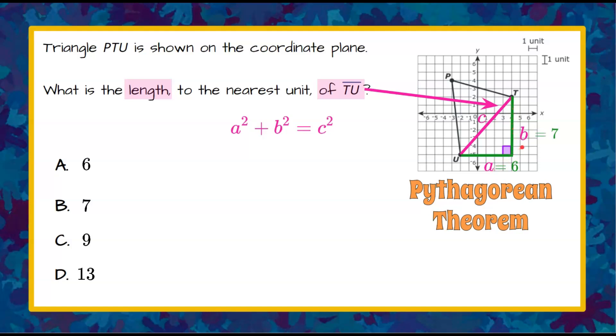So because we know A and B, the legs that form the right triangle, we can come and put those into our Pythagorean Theorem. So A would be 6 squared, B squared is 7 squared, and that will equal C squared, which is the missing side, that segment TU that we're looking for.